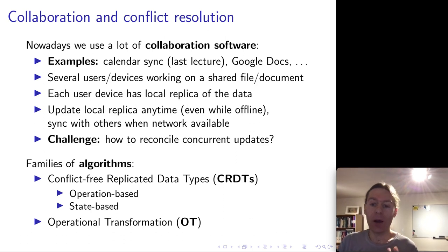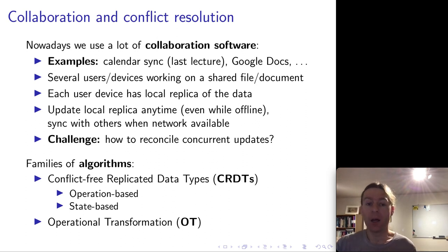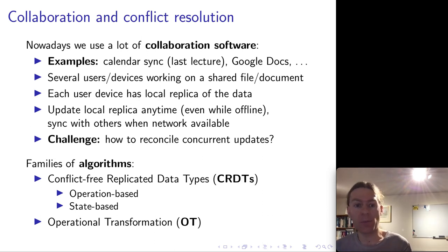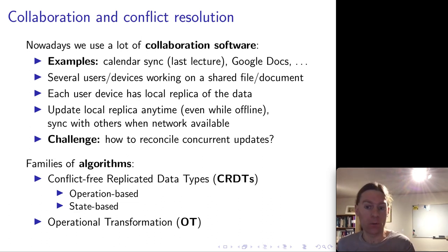There are two main families of algorithms used to implement this type of software. One is conflict-free replicated data types, or CRDTs for short, and they come in two flavors: operation-based and state-based. A second family of algorithms is called operational transformation.